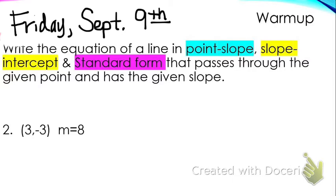So three different ways: point-slope, slope-intercept, and standard form. So let's put away our devices, take out our earbuds, put away our phones please and thank you. We're going to cover the substitution method and then you'll have plenty of time to start on homework.